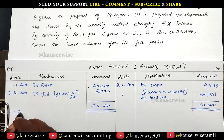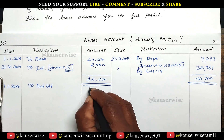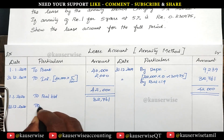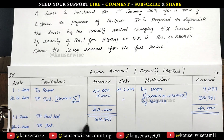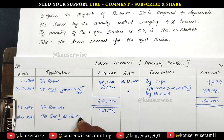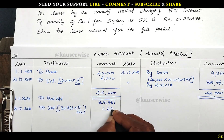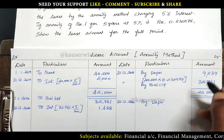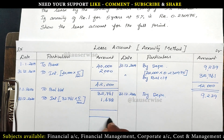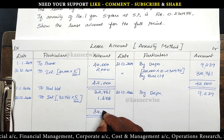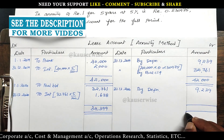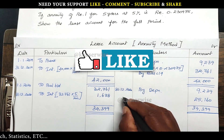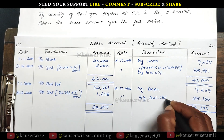On 1st January 2020, balance brought down: 32,761. At the end of the year — 31st December 2020 — interest: 5% on 32,761 = rupees 1,638. Depreciation remains the same: rupees 9,239. Total for the year: 34,399. Closing balance — by balance carry down — is rupees 25,160. This becomes the opening balance for 2021.